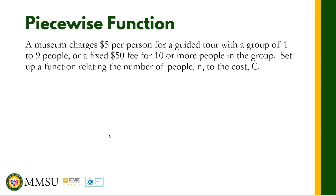For this problem there are basically two sets of domains. For the first domain, that is when the number of people n is between 1 to 9. For the second, when there are 10 or more people, there is another price for that. So n is our input and c is our output, giving us the function c of n with a curly brace.